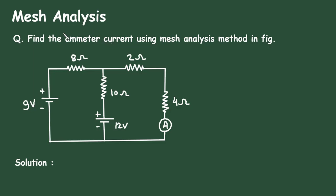Mesh Analysis Question: Find the ammeter current using the Mesh Analysis method in the figure. Here in this circuit, we have to find the current through this ammeter by using mesh analysis.